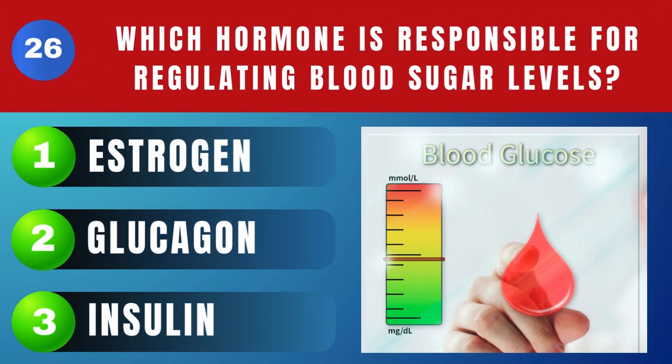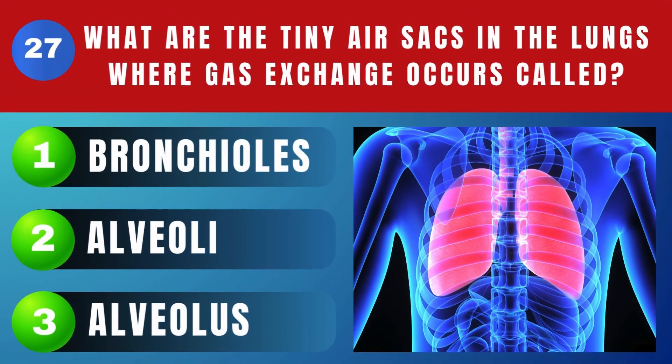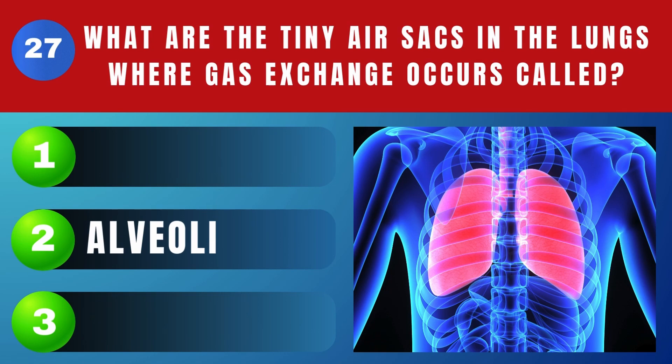Which hormone is responsible for regulating blood sugar levels? Insulin. What are the tiny air sacs in the lungs where gas exchange occurs called? Alveoli.